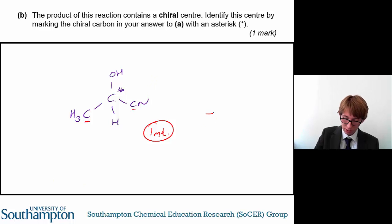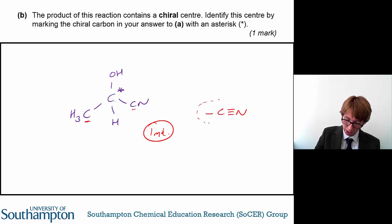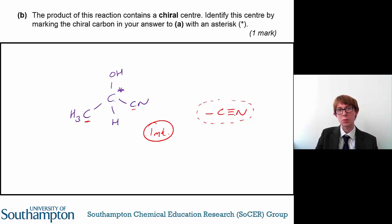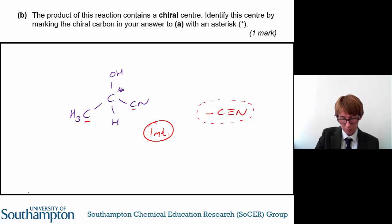Just for reference, the cyanide or nitrile group has this structure — it is a carbon atom triple-bonded to a nitrogen.